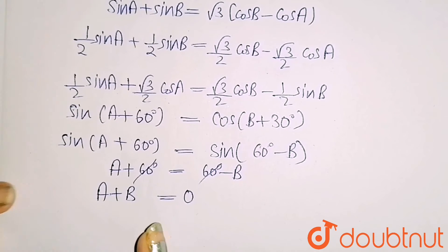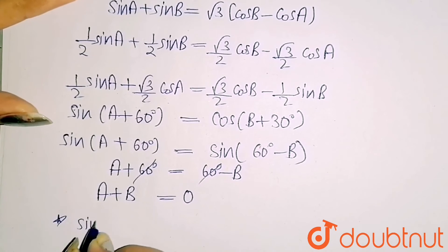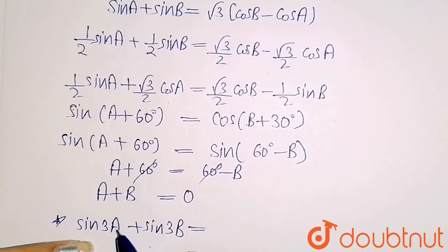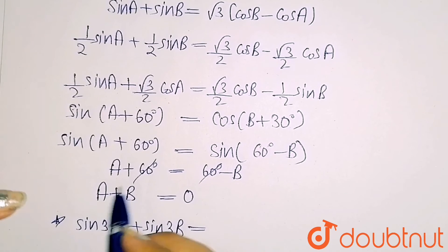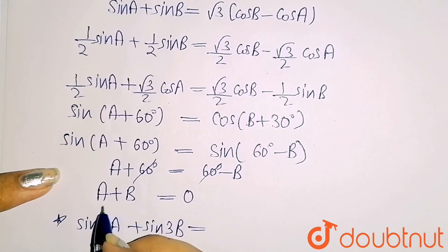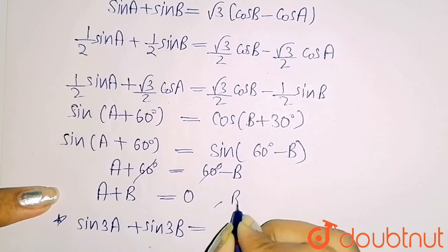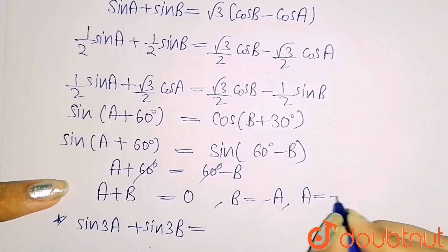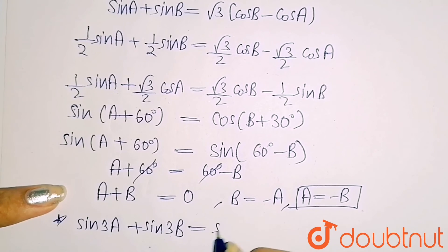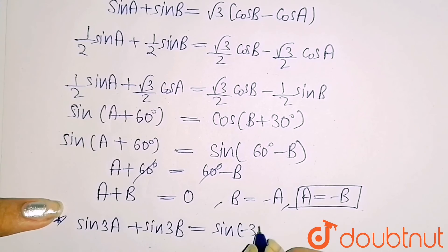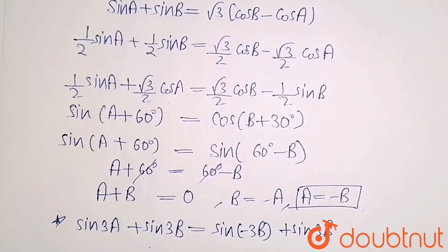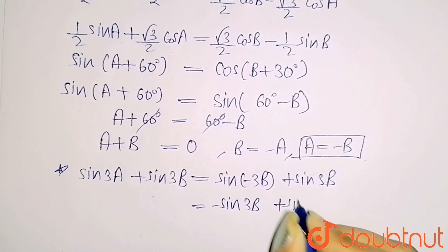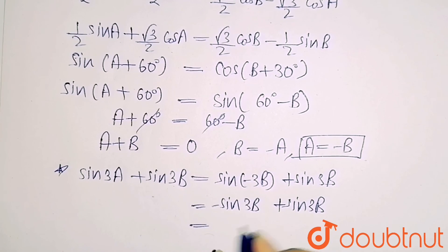Now we have to find the value of sin 3A plus sin 3B. Since A + B = 0, we know A equals minus B. Substituting, sin 3A becomes sin(−3B) which equals minus sin 3B. So sin 3A plus sin 3B equals minus sin 3B plus sin 3B, which equals zero. So the answer is zero.